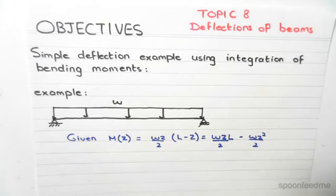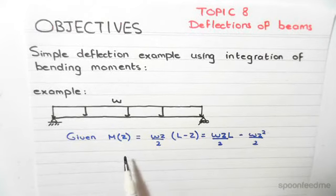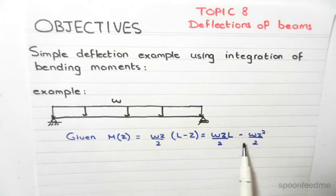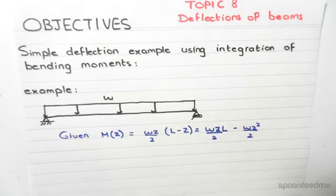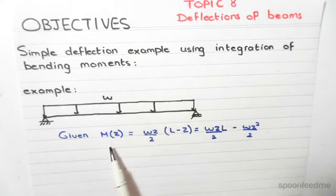Through the use of cuts, it was found that the moment is equal to WZL on 2 minus WZ squared on 2. The deflection is across the Z axis. This is why the moment is a function of Z.